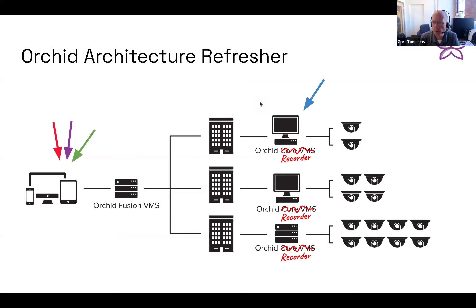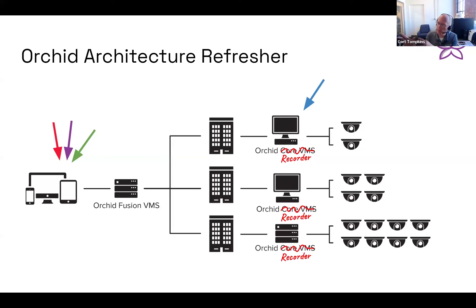Just a refresher for everybody. Orchid VMS has sort of two pieces. There is NVR software, what we used to call Orchid Core, what has just been rebranded as Orchid Recorder. That's the component of software that generally runs at your location, records video from your cameras, and saves the video. It is the NVR software.